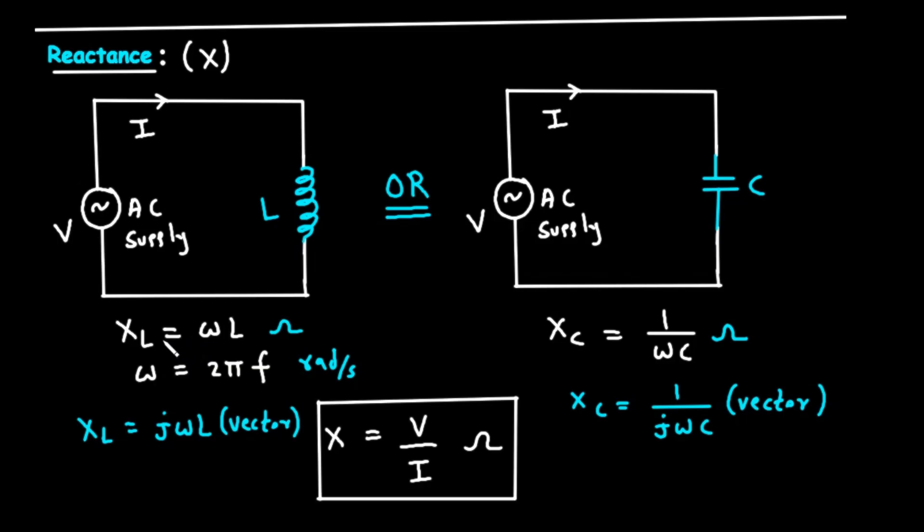This opposition is called inductive reactance, written as X with a subscript L. The formula for inductive reactance is X sub L equals omega times L. Let's break that down. L is the inductance of the coil, measured in a unit called Henrys.